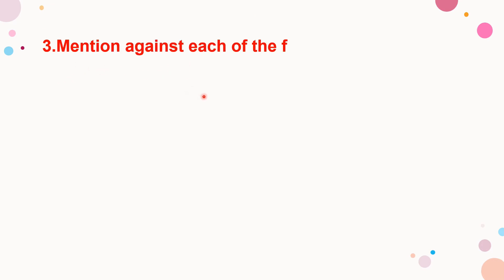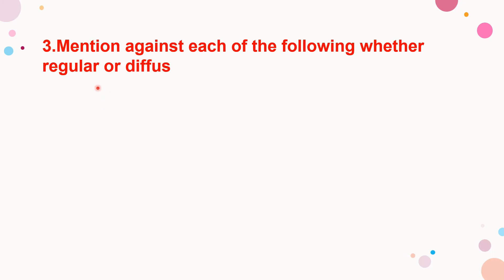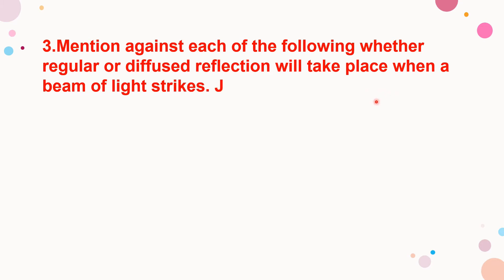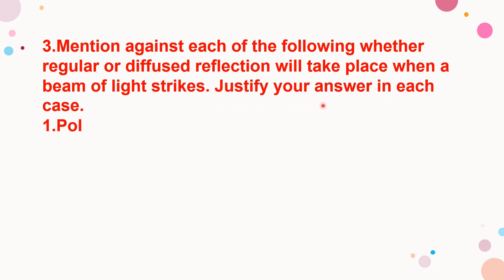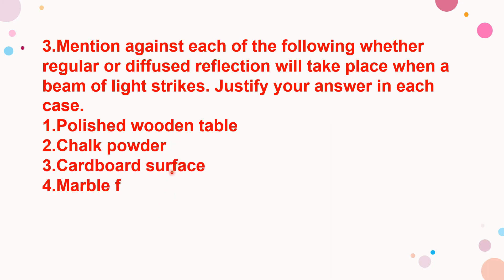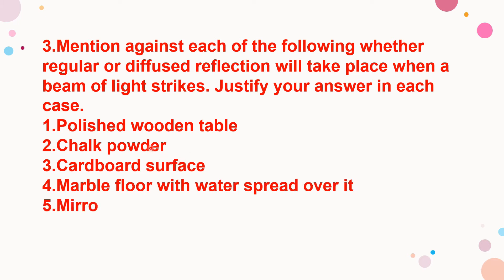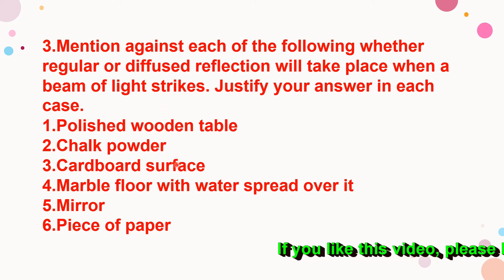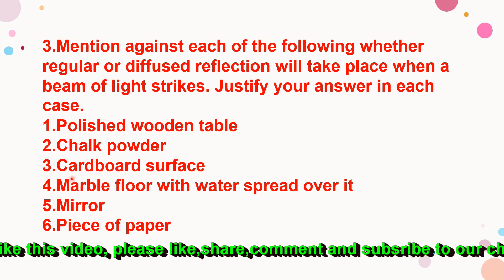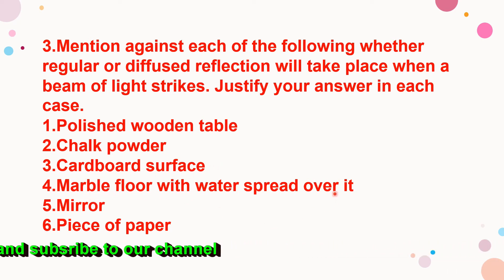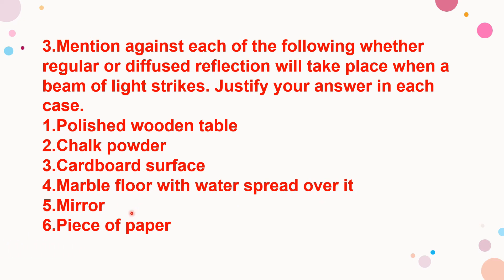Next question: mention against each of the following whether regular or diffuse reflection will take place when a beam of light strikes — justify your answer. The items are: polished wooden table, chalk powder, cardboard surface, marble floor with water spread over it, mirror, and piece of paper.